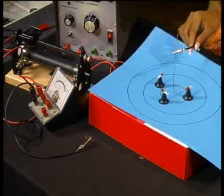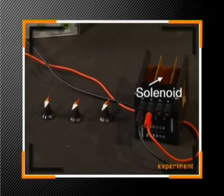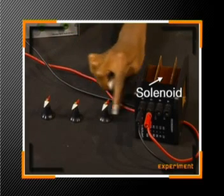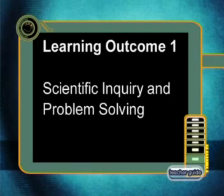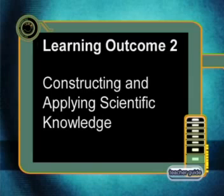This series of lessons links to the core knowledge area of electricity and magnetism and addresses the theme of electromagnetism. In this series, we have conducted many different experiments in order to support an inquiry approach in the construction of the required concepts. In this way, we have addressed the assessment standards related to learning outcomes 1 and 2 in this series.